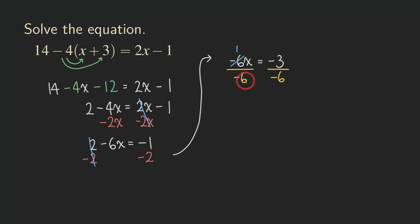So you can see that we're getting 1 over 1 right here, so that's 1x. So we get 1x on the left-hand side of the equation. Usually we don't put the 1 when the coefficient is a 1, so we just have x.